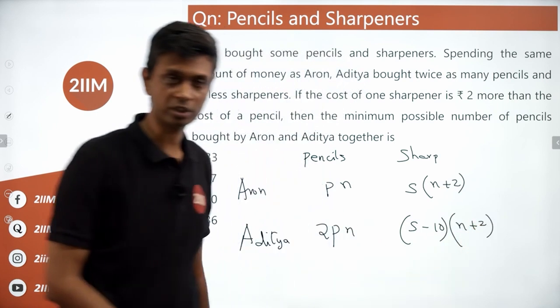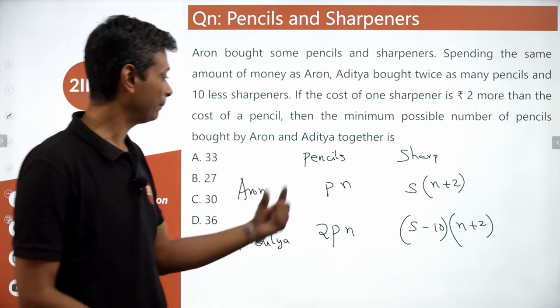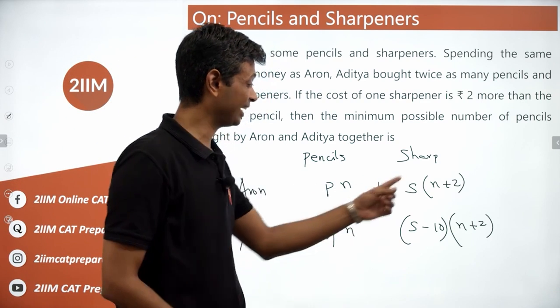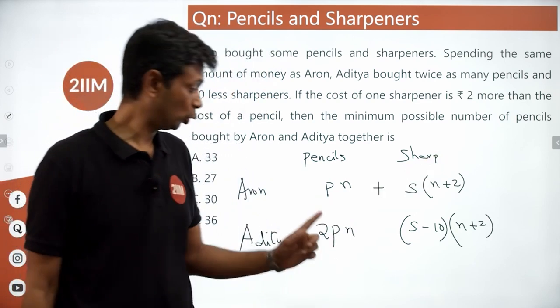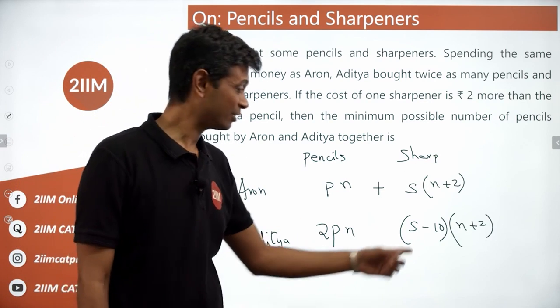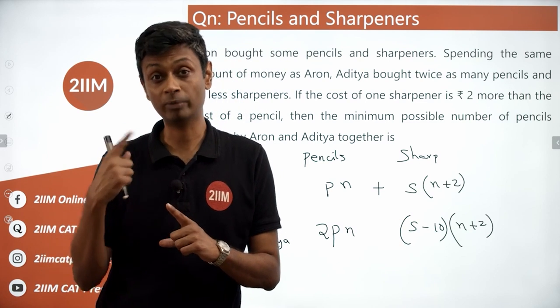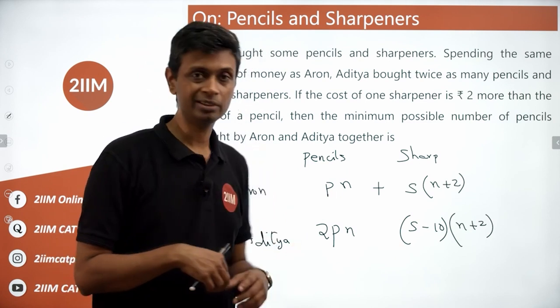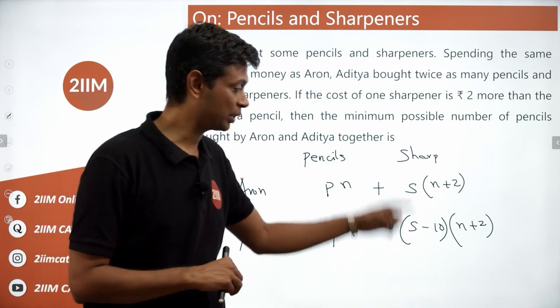Now we should get to writing some equations because the total amount of money spent by both of them is same. P into n plus S times n plus 2 is the amount Aaron spent. 2P into n plus S minus 10 times n plus 2.